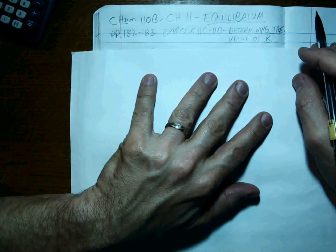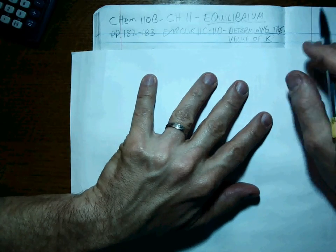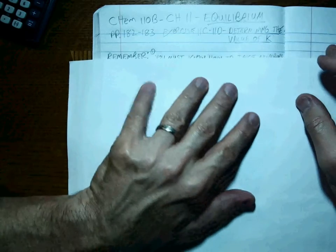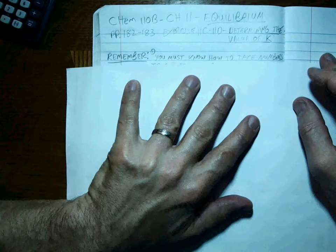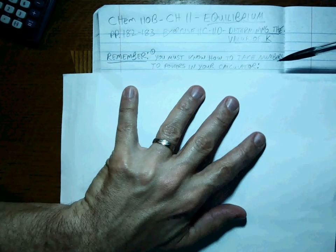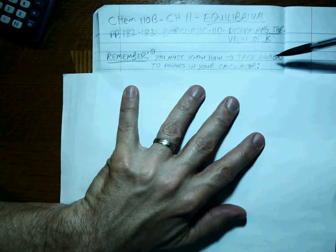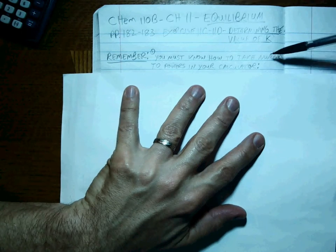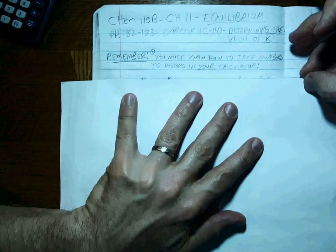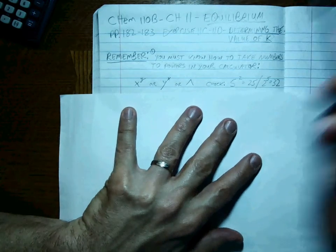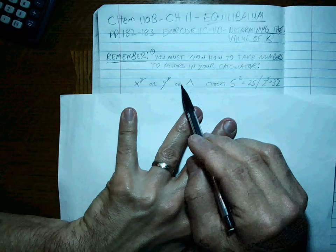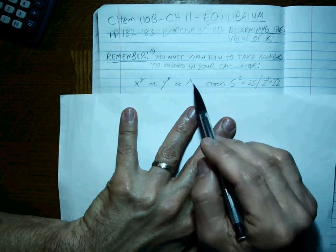And that can change with temperature, by the way. So these will be exercises 11C and 11D. A couple of things you need to remember. You have to know how your calculator works whenever you take a number to a power — it's probably going to be either X to the Y, Y to the X, or the caret button.